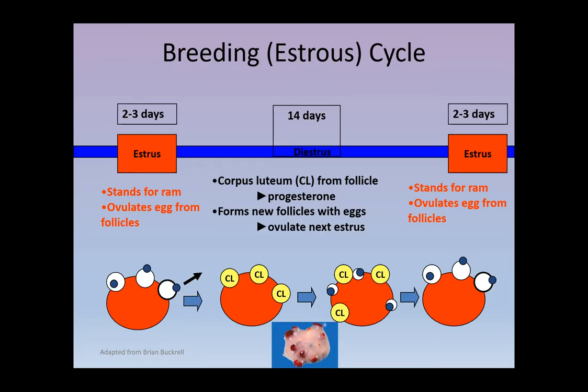Once that happens, whether or not they get bred, they go into a diestrus period. This is a period where they grow something called a corpus luteum, which grows out of the same spot that the follicle was ovulated from. It produces progesterone, and it's the progesterone that inhibits them from being in heat. During that period, it also forms new follicles. If the sheep gets bred in that first estrus and conceives a pregnancy, they will stall at the corpus luteum stage. If they're not pregnant, the corpus luteum naturally regresses, the follicles start to grow again, and they'll come into heat a second time.